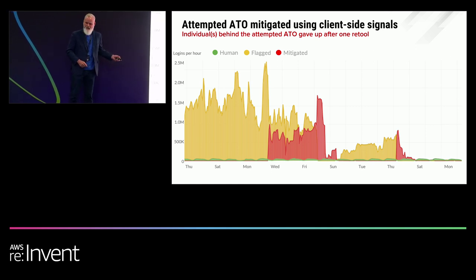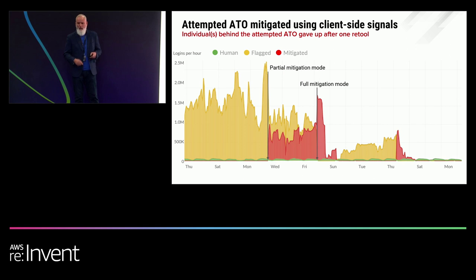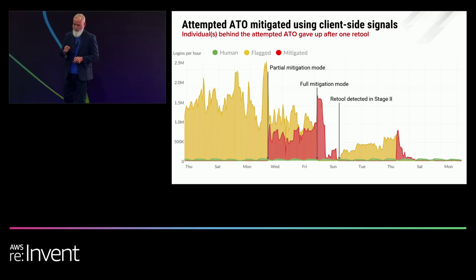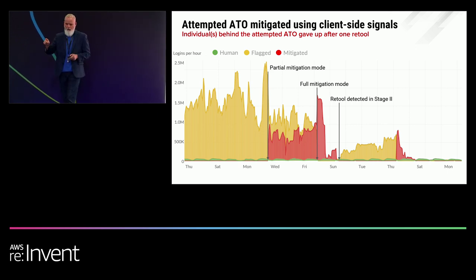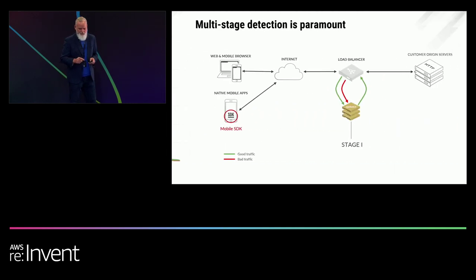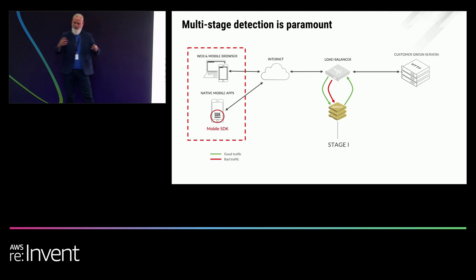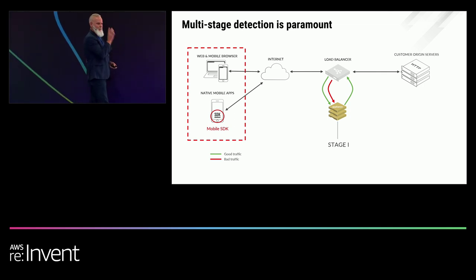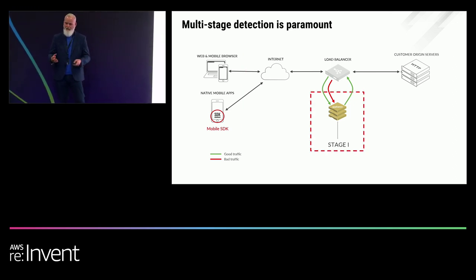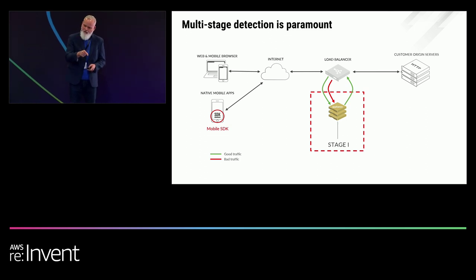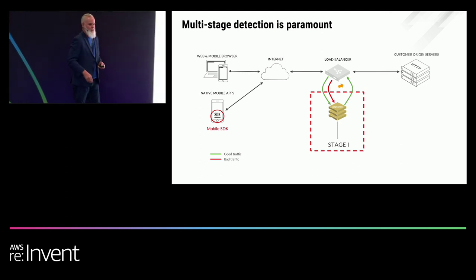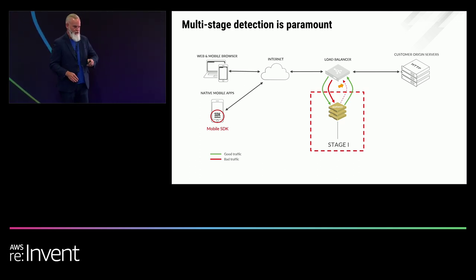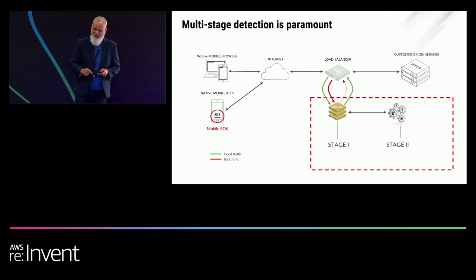In yellow, we are flagging it and passing it to origin. Here we go into partial mitigation mode and then full mitigation mode — everything in red doesn't reach origin. Here's something very important: the two takeaways today are that client-side signals are imperative — you can't do this at the network layer alone — and you must have multi-stage defense. We have JavaScript that runs inside web and mobile browsers, and an SDK that sits alongside the native app on mobile devices. The JavaScript and SDK collect the signals I described, pass them through the internet to an appliance, which analyzes those signals in real time and decides if the traffic is good or bad. If it's bad, it takes mitigating action. If it's good, it passes it to origin. But no bad traffic ever reaching origin is a pipe dream — attackers retool, new tools come out. You've got to have a second stage.